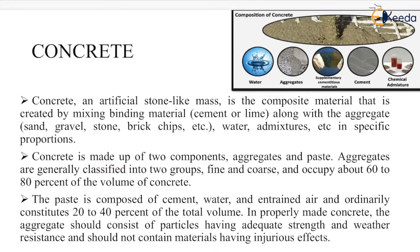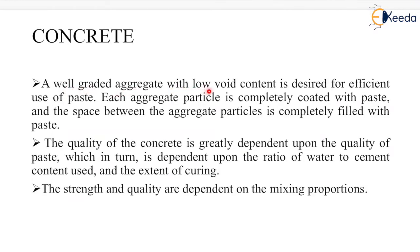Concrete is made up of two components: aggregates and paste. Aggregates are generally classified into two groups — fine and coarse aggregate — and occupy about 60–80% of the volume of concrete. The paste is composed of cement, water, and entrapped air, and ordinarily constitutes 20–40% of the total volume. A well-graded aggregate with low void content is desired for efficient use of paste; each aggregate particle is completely coated with paste, and the space between aggregate particles is completely filled with paste.